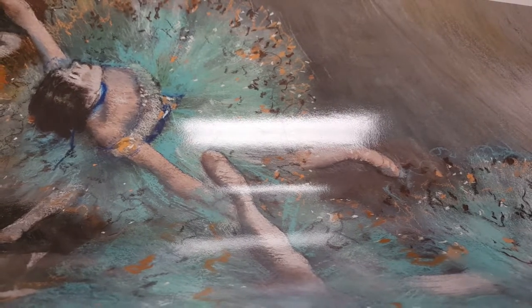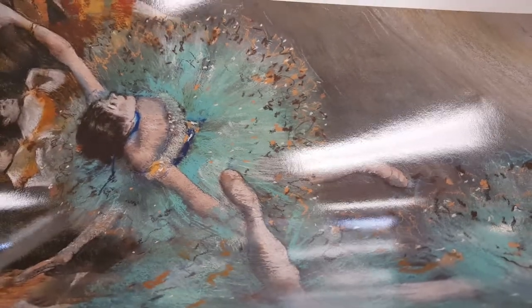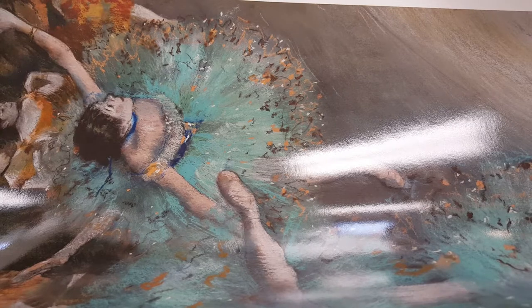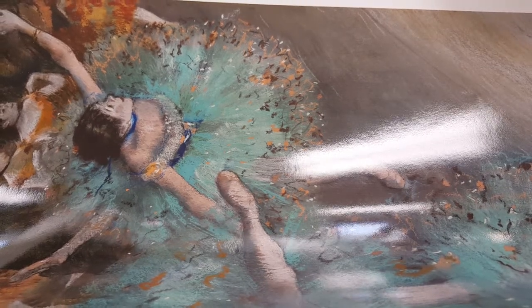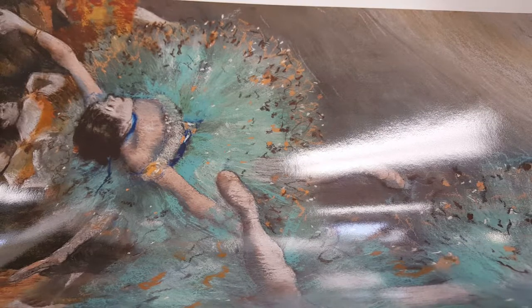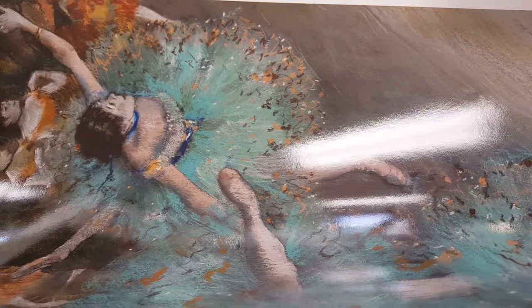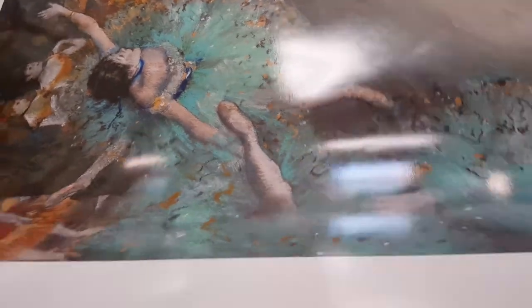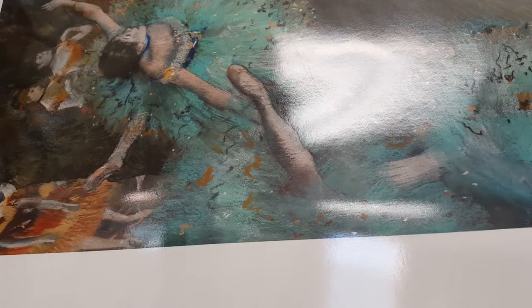This is the tutorial for Edgar Degas, the green dancer. This is for our upper grades, so there's going to be some different shapes and a bit more detail. If you are uncomfortable with this level, please feel free to use the younger level that we did with simpler shapes, circles and triangles, keeping that very simple.